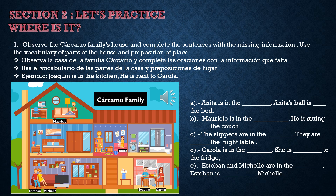Ejemplo: Joaquín is in the kitchen. He is next to Carola. En esta parte unimos todo lo que estamos aprendiendo: partes de la casa, preposiciones. A trabajar ahora.